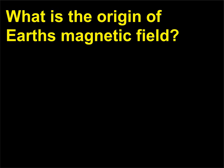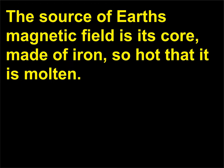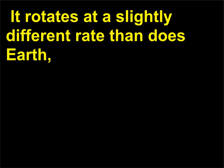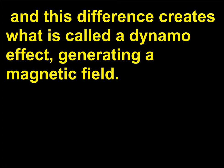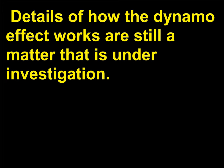What is the origin of Earth's magnetic field? The source of Earth's magnetic field is its core, made of iron so hot that it is molten. It rotates at a slightly different rate than does Earth, and this difference creates what is called a dynamo effect, generating a magnetic field. Details of how the dynamo effect works are still a matter under investigation.